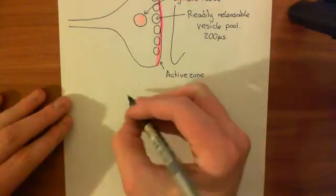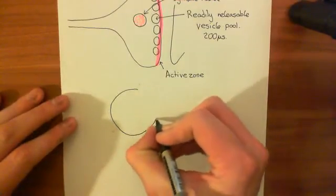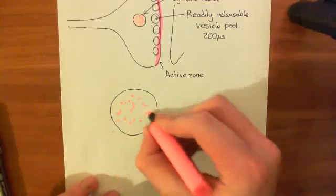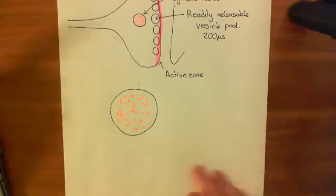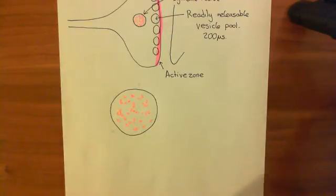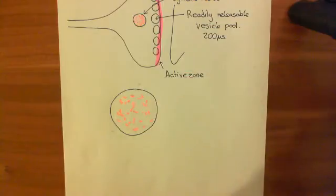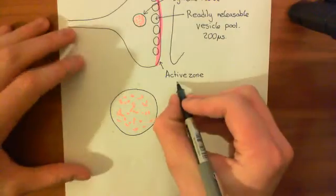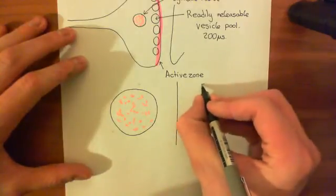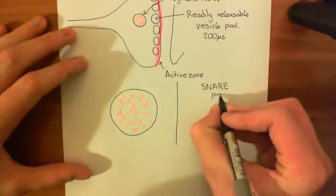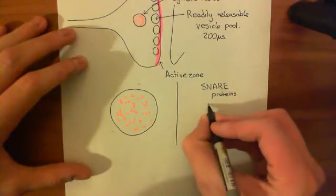Let's draw our synaptic vesicle here — this vesicle which is full of neurotransmitter. In order for the synaptic vesicle to dock at the active zone of the presynaptic axon terminal, we need proteins in the membrane of the synaptic vesicle to bind to proteins in the membrane of the presynaptic cell. These proteins that are going to bind to each other are known as SNARE proteins. SNARE stands for SNAP receptors, because all of these SNARE proteins bind to another protein known as SNAP.